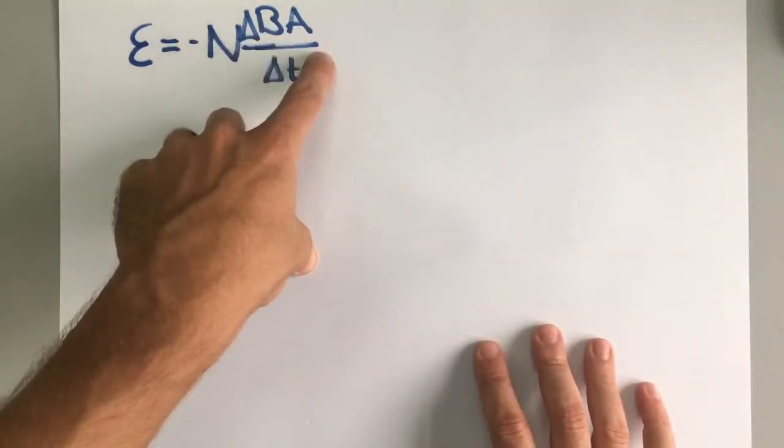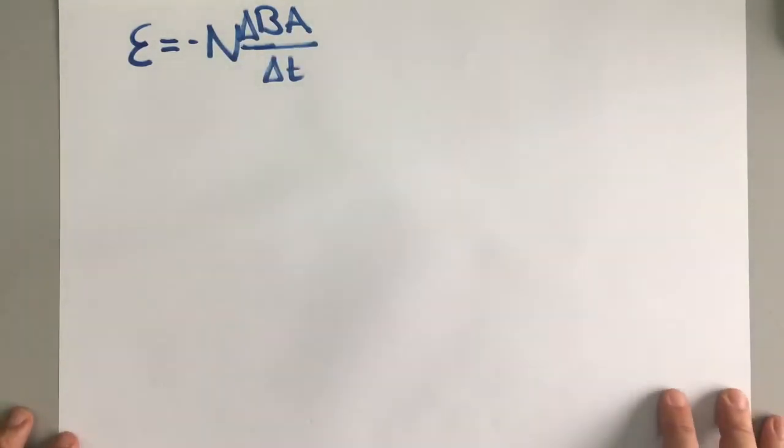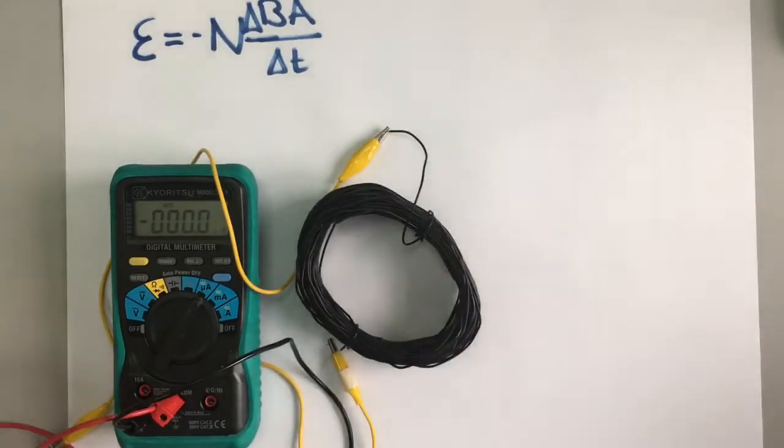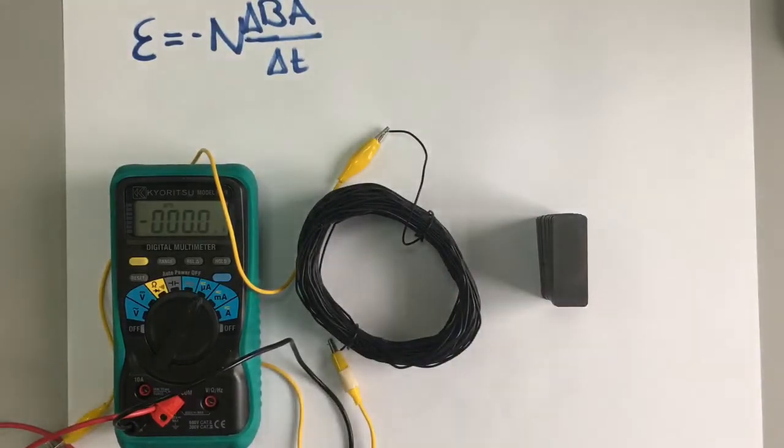There are lots of different ways of changing the flux in a coil of wire. To show you them, I've got a coil of wire just here which is connected to this ammeter here, and I also have some magnets.